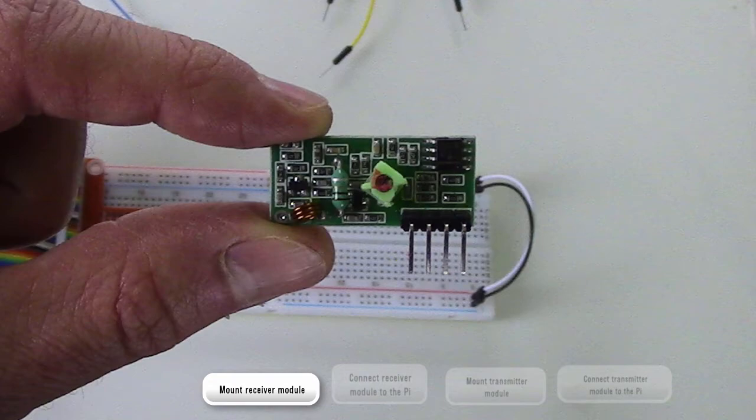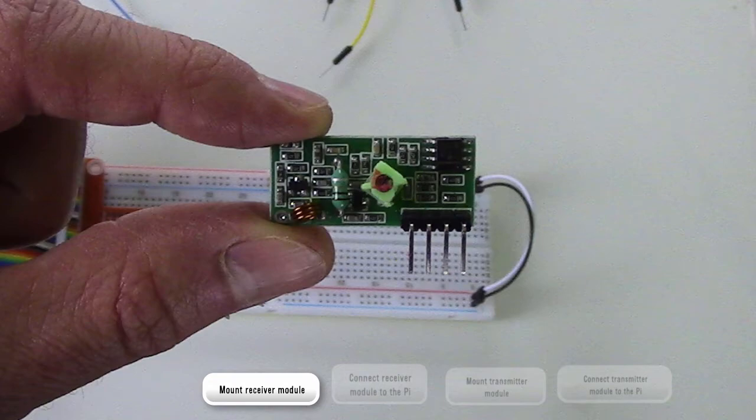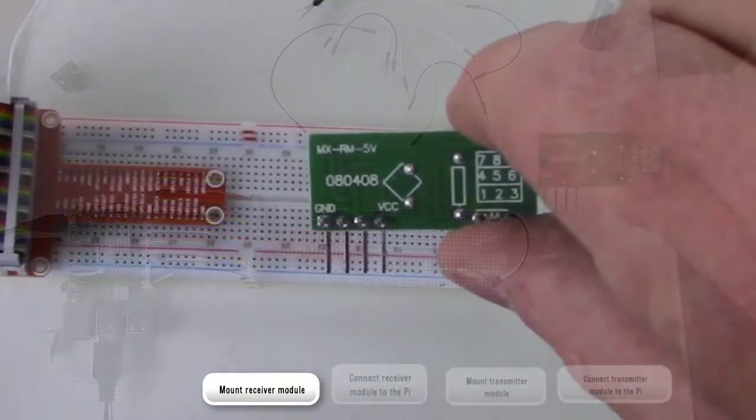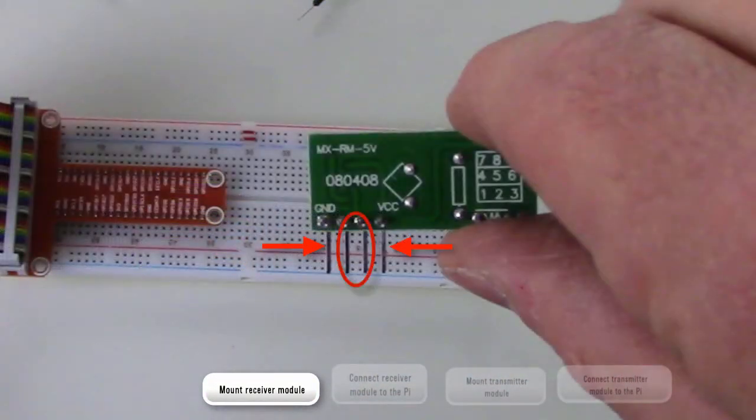This particular receiver module doesn't appear to be marked, so how did I know that? If I turn the module over, the ground and VCC pins are marked, meaning the other two are the data pins.